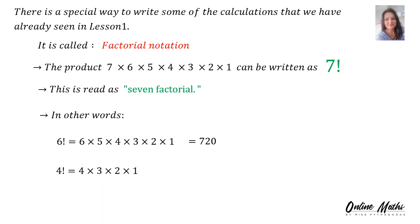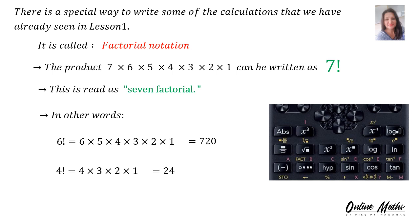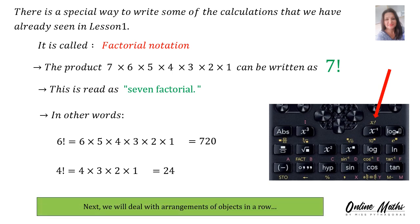4 factorial is 4 times 3 times 2 times 1 and the answer is 24. We can even calculate factorials using our calculator. There is a little button and you find it there on your calculator. Remember, if you use the yellow buttons, you have to press shift as well.